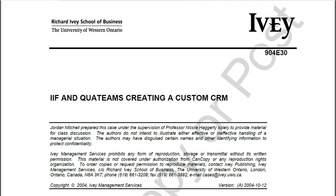IAF was eight months into a customized development of a customer relationship software being done by QuaTeams. IAF is a member organization that wanted to replace its customer relationship management, which was working at that point using Microsoft Access — integrating member information from economic research, membership, events, and finance departments.